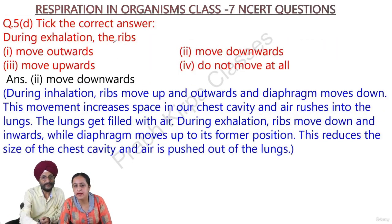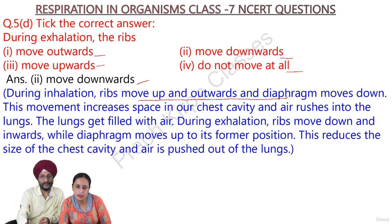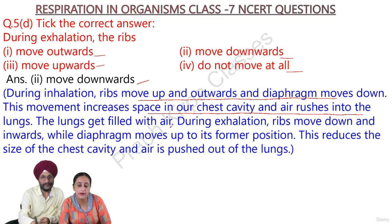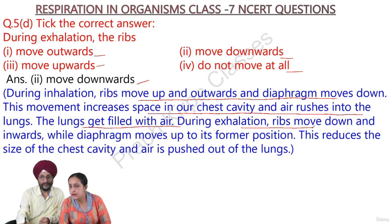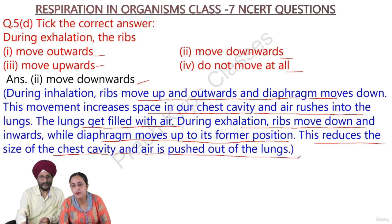During inhalation, the ribs — 1. move outwards, 2. move downwards, 3. move upwards, or 4. do not move at all? The answer is: the ribs move up and outwards and the diaphragm moves down. This movement increases the space in the chest cavity and air rushes into the lungs. During exhalation, the ribs move down and inward while the diaphragm moves up to its former position, reducing chest cavity size and pushing air out.